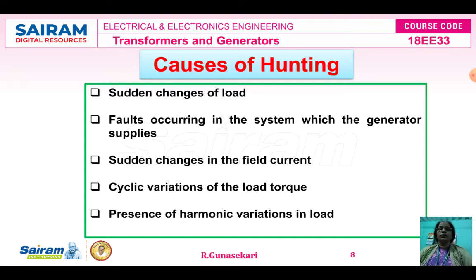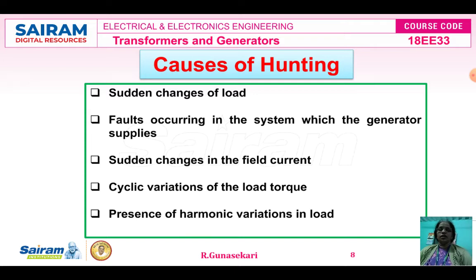If the speed varies, the frequency is mismatched and we cannot synchronize the synchronous generator to the bus bar. The fourth cause is cyclic variation of the load torque — based on the daily load curve, the load torque characteristics show an increasing and decreasing cyclic pattern based on the load used by customers. The fifth cause is the presence of harmonic variations in load; with AC power supply, odd and even harmonics are present, causing hunting in synchronous generators.